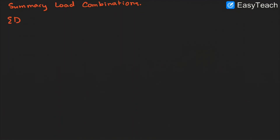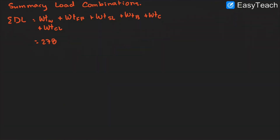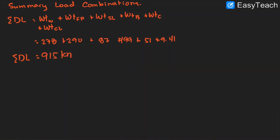Summary of load combinations: For total dead load, we have the weight of the wall, weight of the floor finish, weight of the slab, weight of the beam, weight of the column, and weight of the ceiling. Summing: 278 + 290 + 87 + 199 + 51 + 9.41 = total dead load of 914.41, also known as 915 kilonewton.